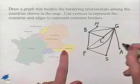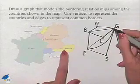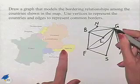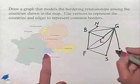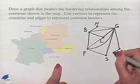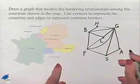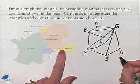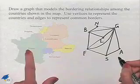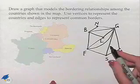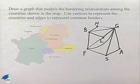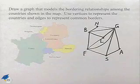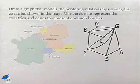Austria needs to be connected to Germany with a common border, and to Switzerland. Finally, Switzerland should have an edge between itself and Austria, Germany, and France — and we have those in the graph. This is the graph that depicts the bordering relationships.